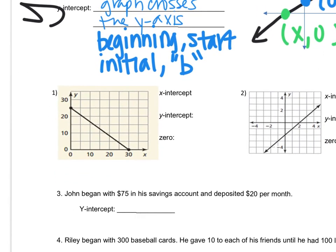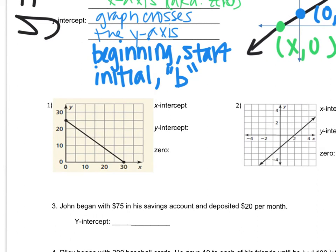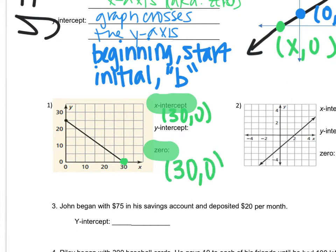Number one asks us to identify the x-intercept, y-intercept, and the zero of the graph. My x-intercept is where the graph touches the x-axis, which is the ordered pair (30, 0). And remember, whatever my x-intercept is, is also my zero, so my zero is also (30, 0). My y-intercept is where the graph touches the y-axis, which is the ordered pair (0, 25).